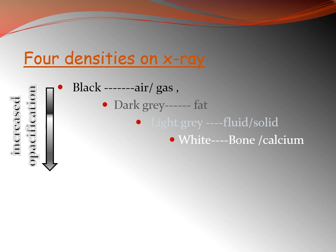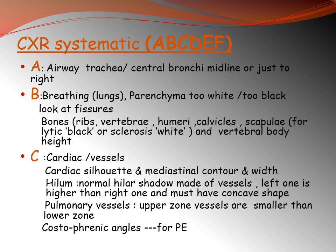Let's revise the densities on x-ray. Black denotes air or gas; dark gray denotes fat; light gray denotes fluid or soft tissue; and white denotes bone or calcium.